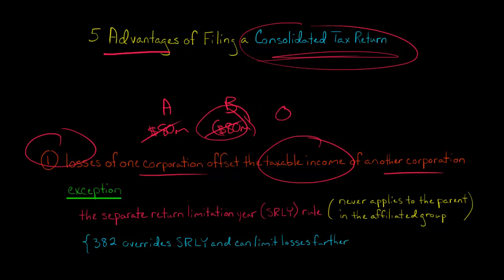came in and joined the affiliated group and C had prior losses from back when it was by itself filing its own return and it had $50 million in prior losses. These are from previous years before it became part of this consolidated group. So any prior losses, basically, long story short,